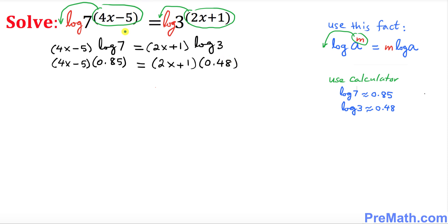Now go ahead and multiply it out, distribute it. Likewise multiply it out over here. Once you multiply it out, 4x times 0.85 gives us 3.4x minus 4.25 on the left hand side. On the right, 2x times 0.48 gives 0.96x plus 0.48.